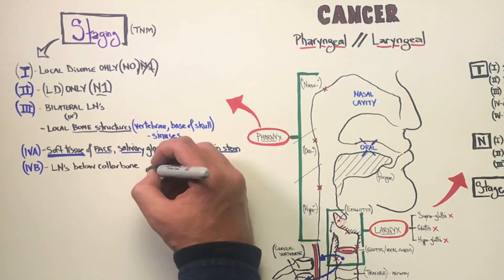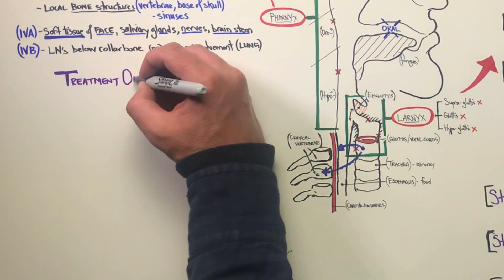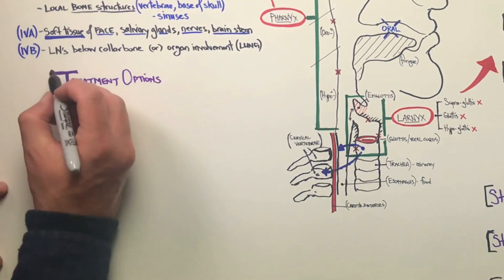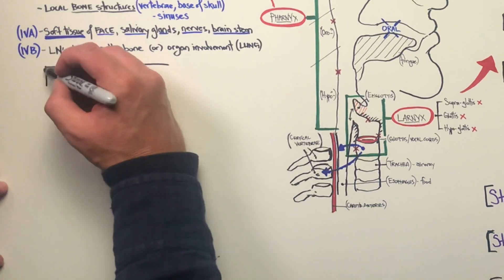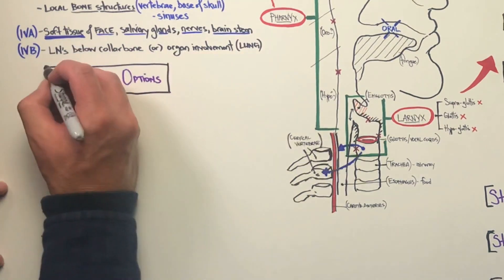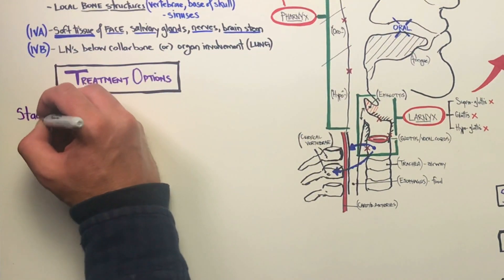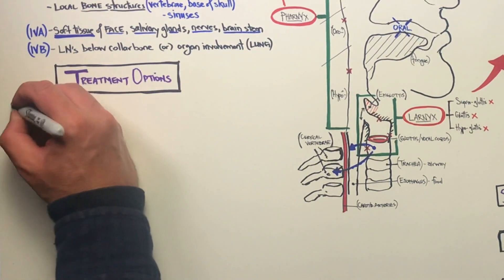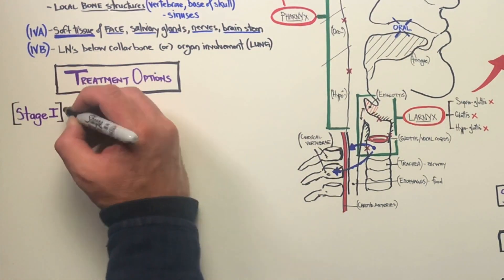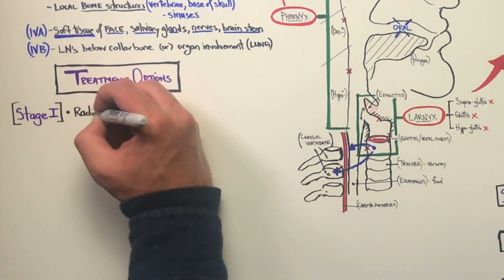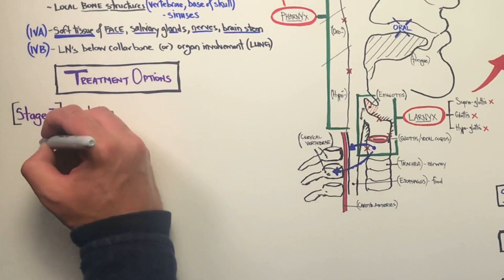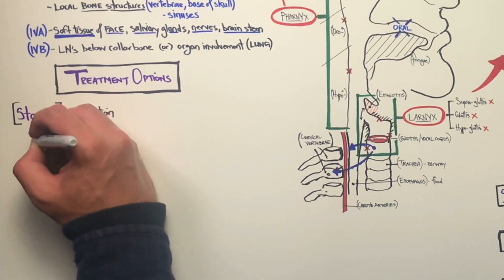In stage 4A and B, we have soft tissue involvement, and cranial nerves can be involved. In stage 4B, lymph nodes below the collarbone and organ involvement — for instance, the lungs — are seen.